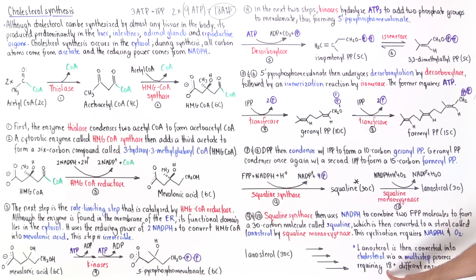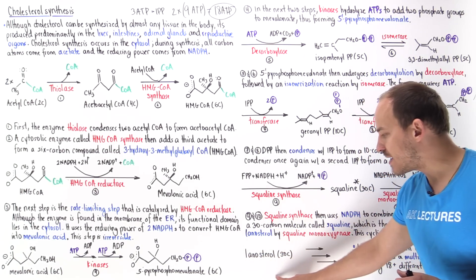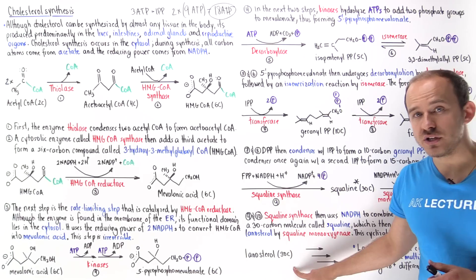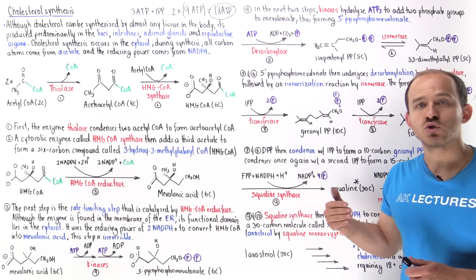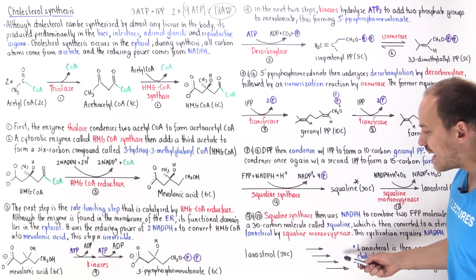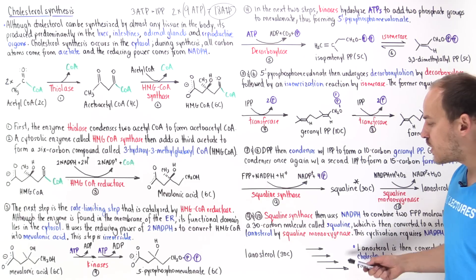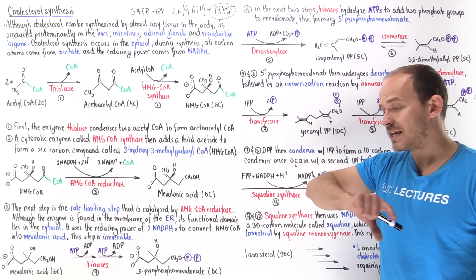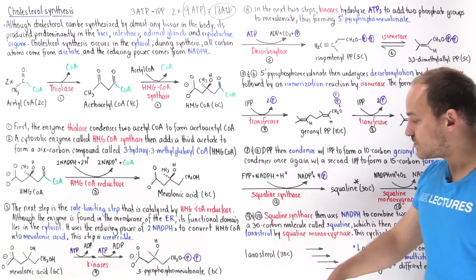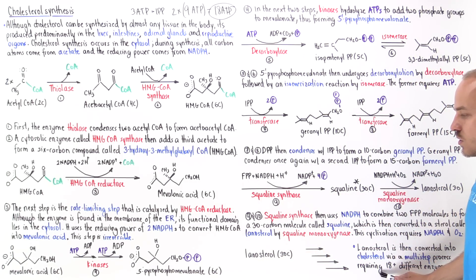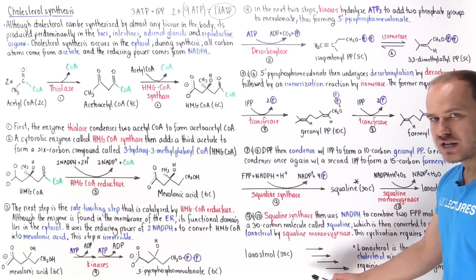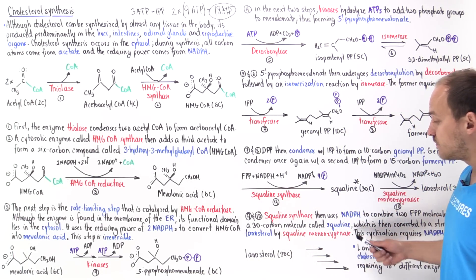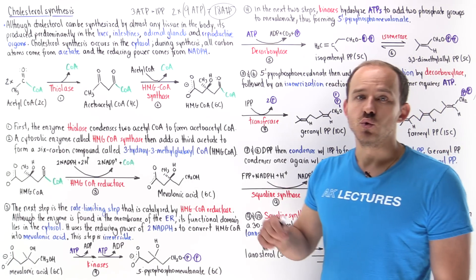We have as many as 18 or more different enzymes utilized by the cell to convert lanosterol into cholesterol. Lanosterol has 30 carbon atoms, but cholesterol has 27 carbon atoms, so in this process we have to remove some carbon atoms, reduce some double bonds, and place carbon double bonds in different locations. Ultimately, we convert lanosterol into cholesterol, though the specific details of all these reactions don't need to be memorized.